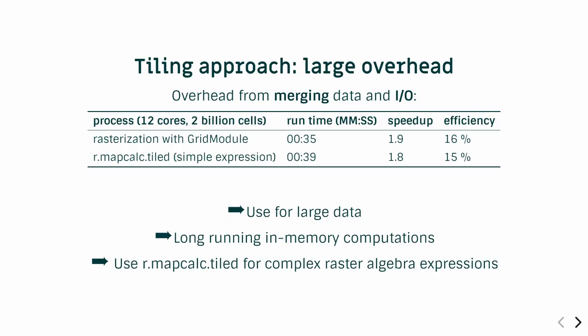Regarding the tiling approach, I had trouble with large overhead. Part of tiling is that you typically need to merge the data back, and that part takes quite a bit of time. There can also be IO problems. I didn't get much parallel efficiency from tiling unless I used it with large data. It's better for long-running in-memory computations to avoid IO problems, and it makes more sense for really complicated raster algebra expressions.